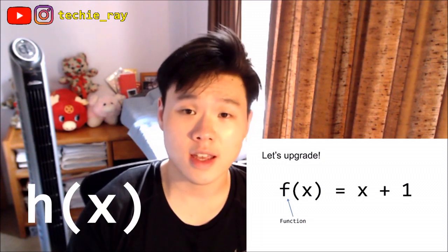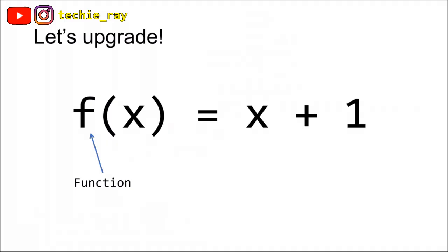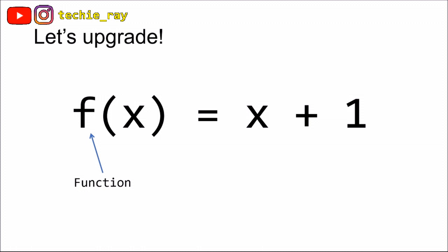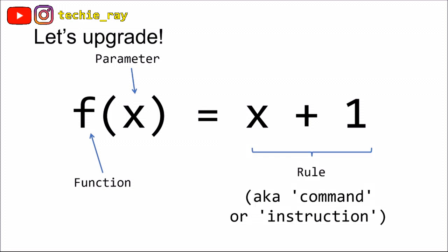It doesn't have to be f. You could call it g, h, whatever. The x here is a variable or technically a parameter. It's basically an input value. Whatever number x represents on the left-hand side, you basically substitute that number into the x plus 1 on the right-hand side. That right-hand side is called a rule or command or instruction.